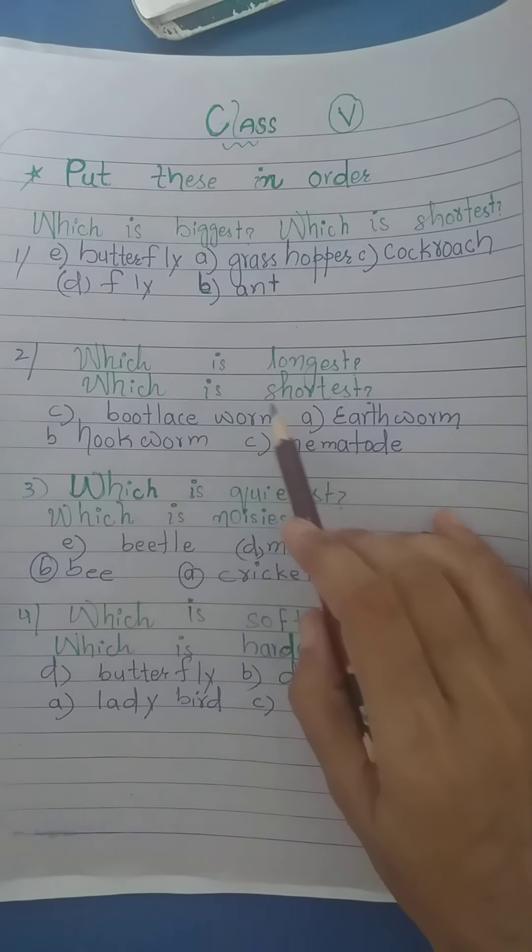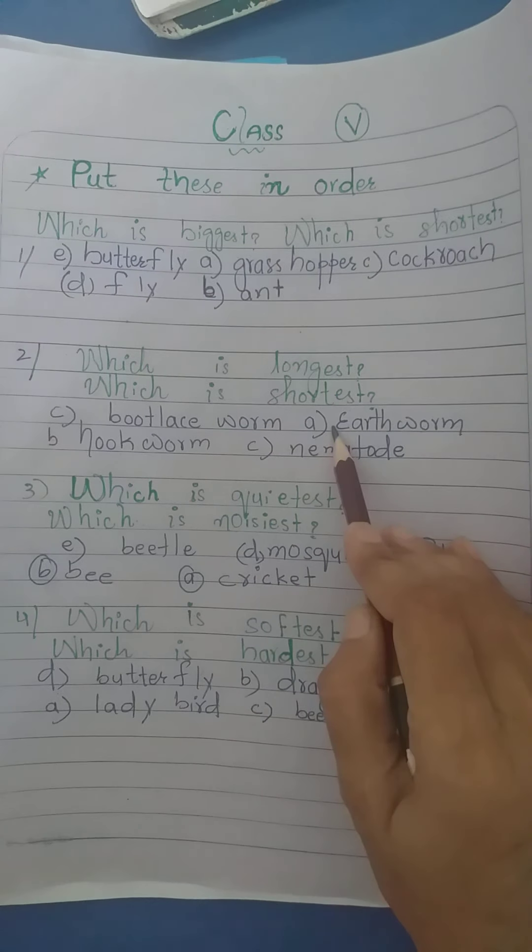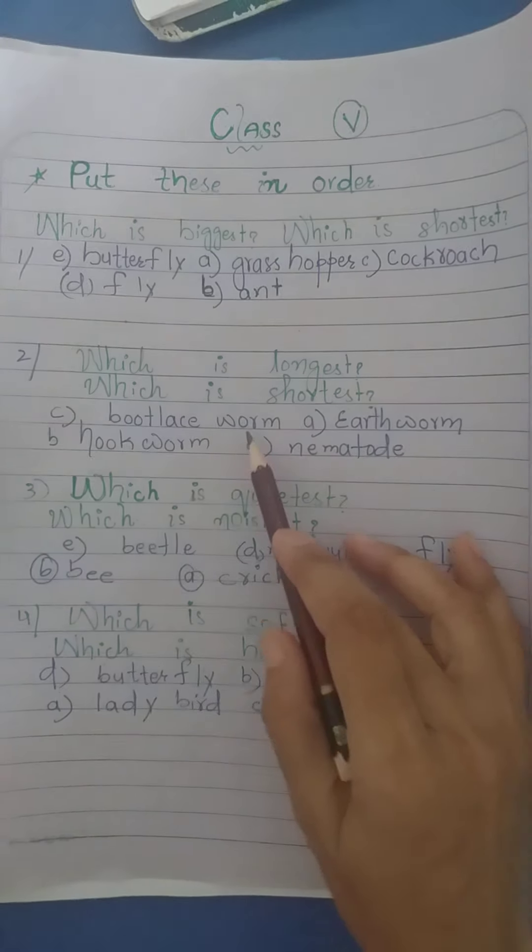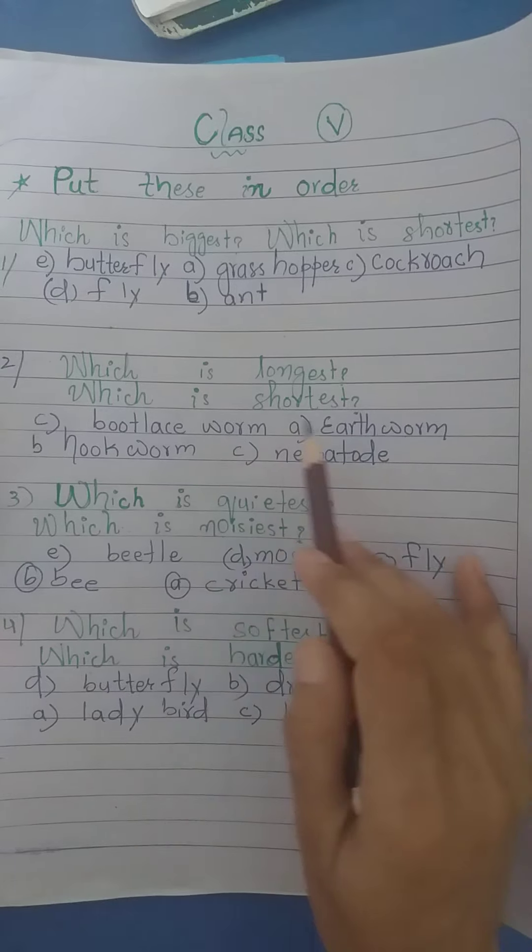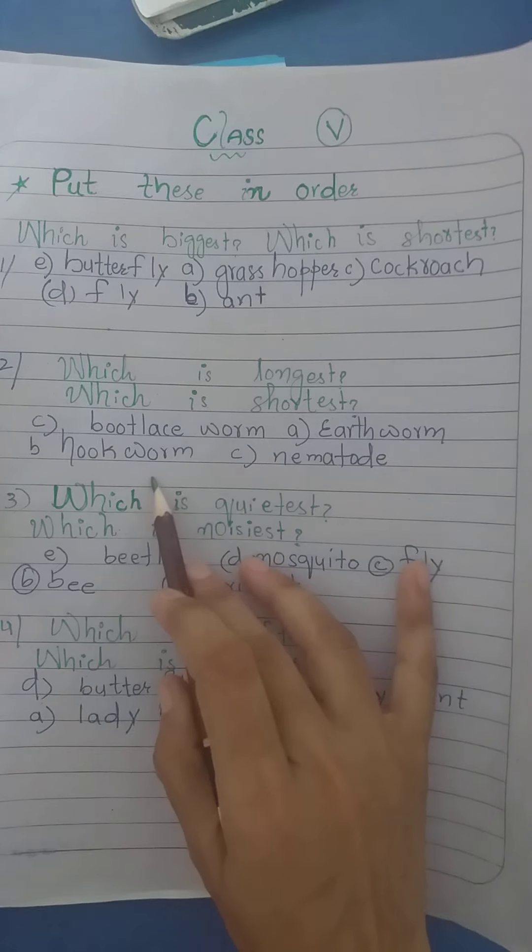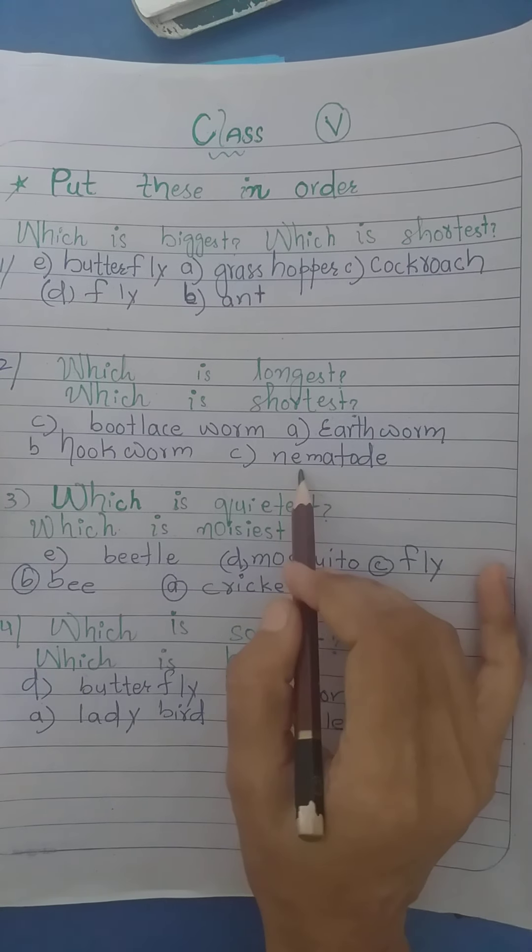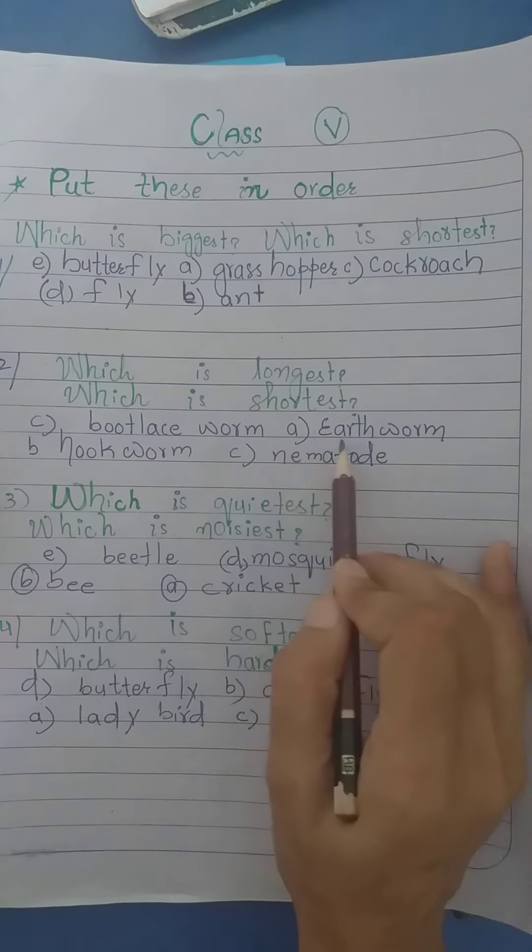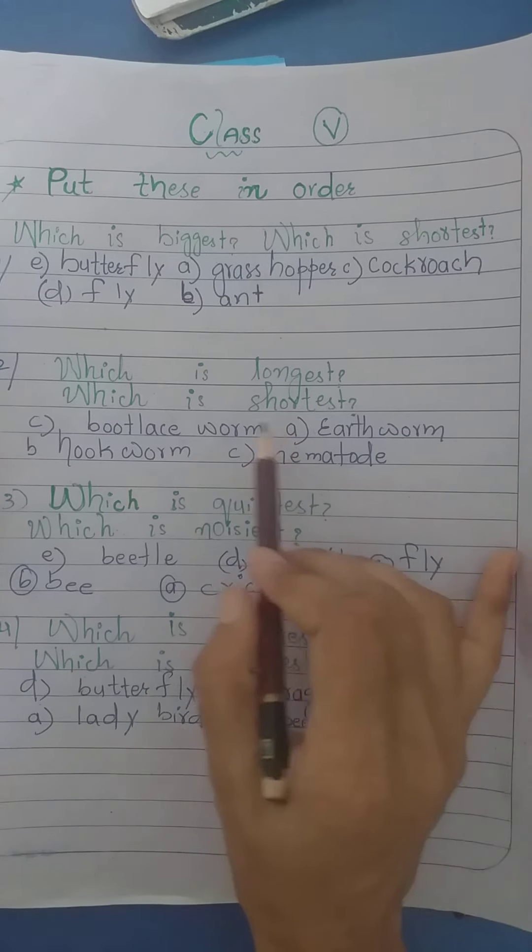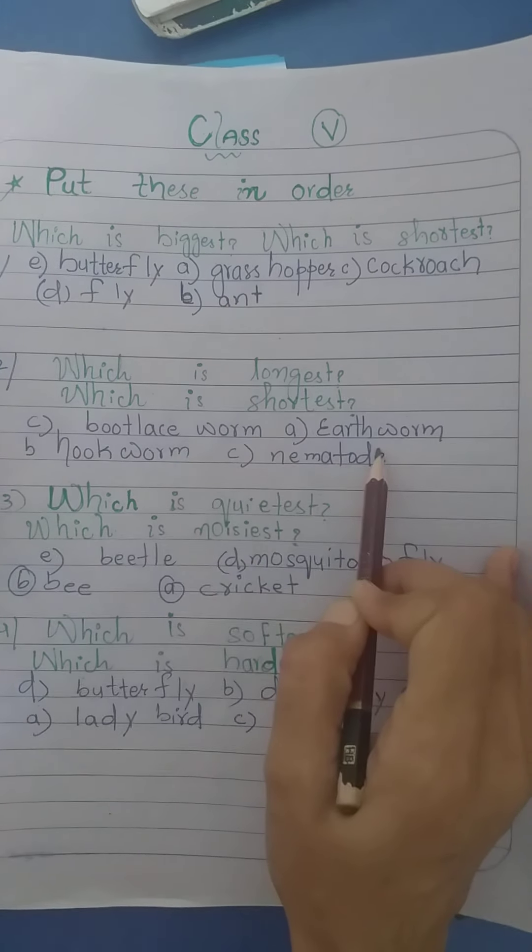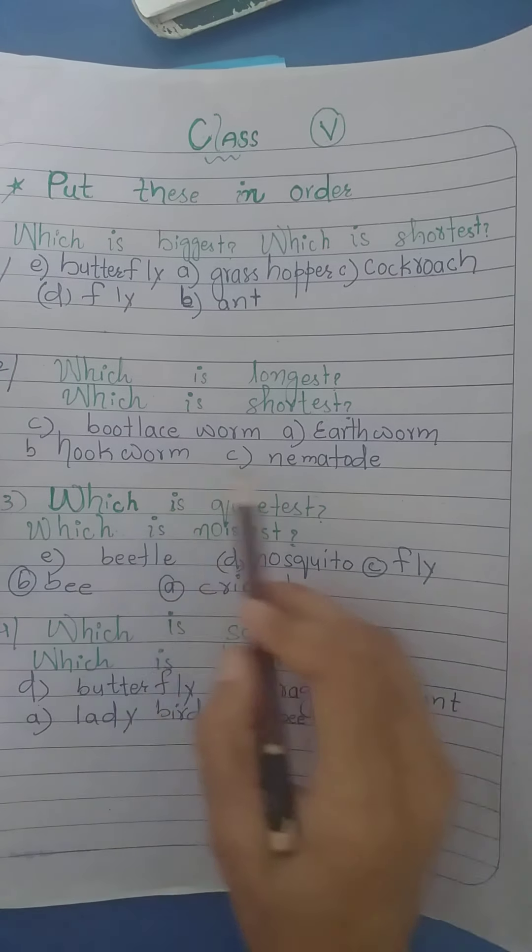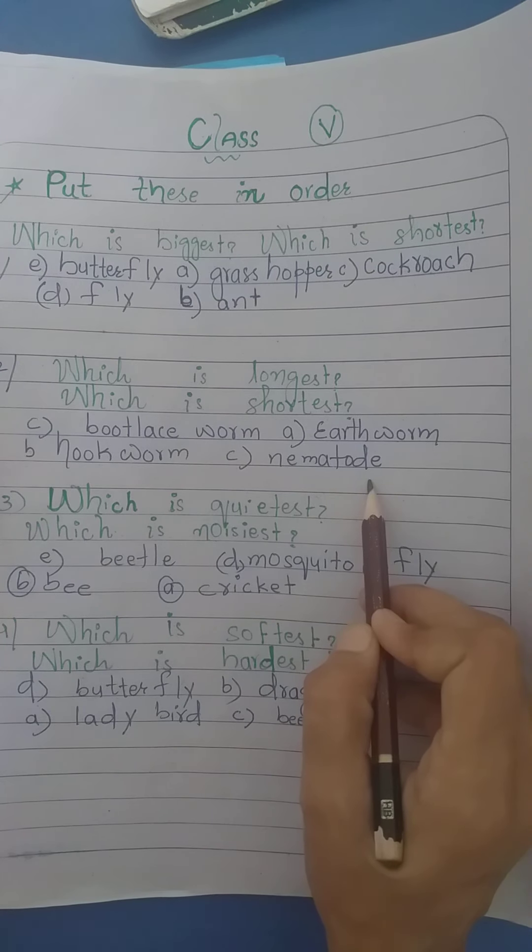Number 2: which is longest, which is shortest. Number 1 longest is beetles. Number 2 earthworm and number 3 hookworm and nematodes are the smallest one. So these all are put in order. This is longest, this is second longest, and then this and then this shortest is nematode.